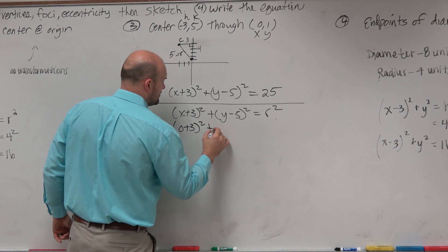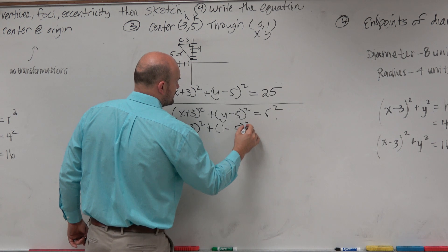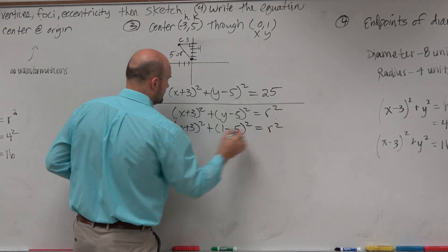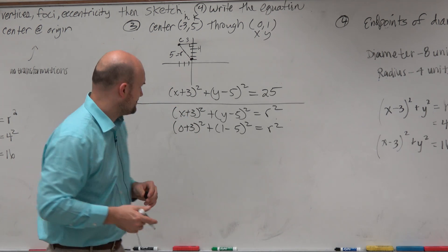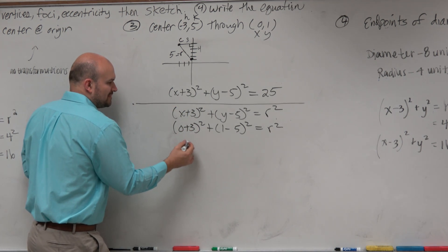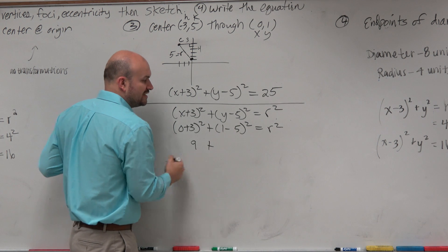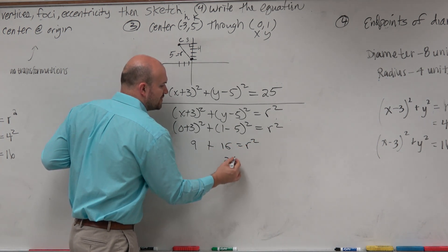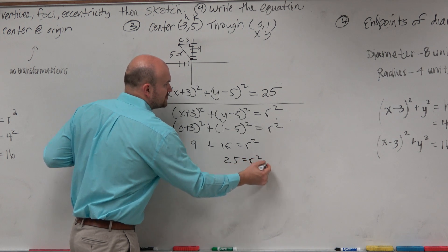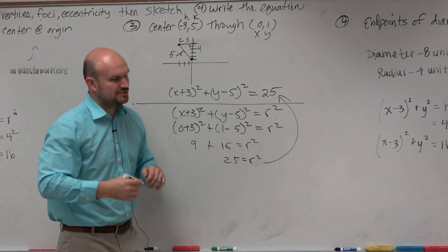(x+3)² + (y-5)² = r². So now we just plug them in. 0 plus 3 is 3, squared is 9. 1 minus 5 is negative 4, squared is 16. And we get 25 equals r², which we already knew was going to be our answer.